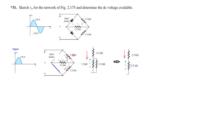We have 2.2 kΩ in series, and the other two resistors are in parallel. Two 2.2 kΩ resistors in parallel become 1.1 kΩ. We are interested in the voltage across the parallel combination. By the voltage division rule: V0_max = 170 V divided by (2.2 + 1.1), multiplied by 1.1, giving V_max = 56.67 volts.